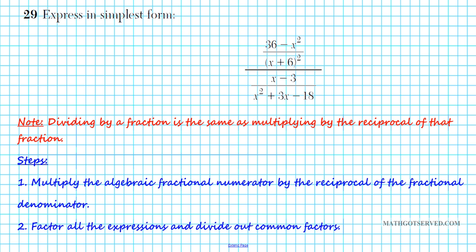All right, let's take a look at number 29. It says, express in simplest form. So we have this expression right here: 36 divided by X squared over X plus 6 quantity squared divided by X minus 3 over X squared plus 3X minus 18.